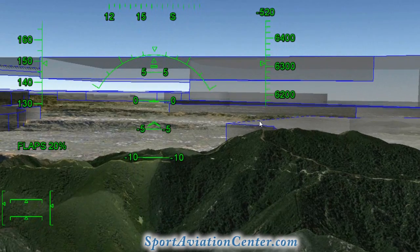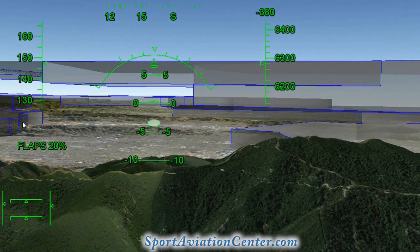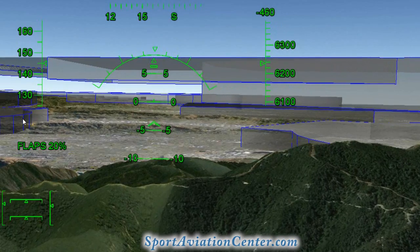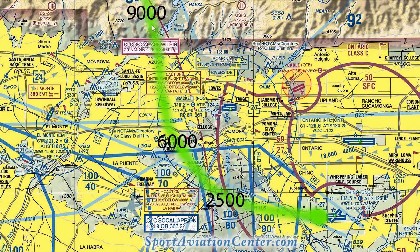We've got our Class Delta airspace over here on both sides as we descend on down. We're just coming over the edge of the mountains and we need to descend down to around 6,000 feet to get underneath our Class Bravo airspace, and then continue descending down to 2,500 feet to get under our Class Charlie airspace. So we've got that nice gradual descent coming from high in the mountains, down below 6,000, and then below 2,500.